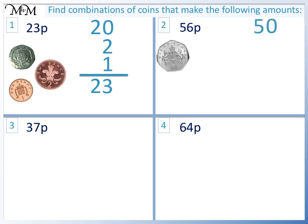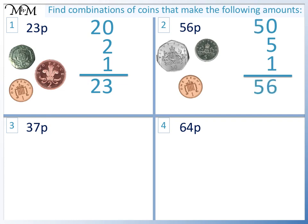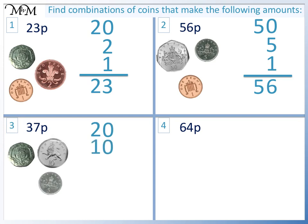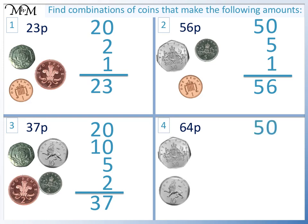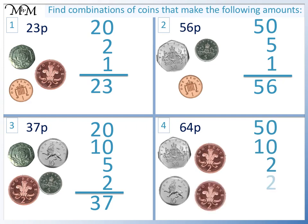Question 2: We have 50p, 5p and 1p. We can see that 0 plus 5 plus 1 equals 6, plus five tens make 56p in total. Question 3: We have 20p, 10p, 5p and 2p. We can see that 0 plus 0 plus 5 plus 2 equals 7, and 2 plus 1 equals 3, making 37p in total. Question 4: We have 50p, 10p, 2p and 2p. We can see that 0 plus 0 plus 2 plus 2 equals 4, and 5 plus 1 equals 6, making 64p in total.